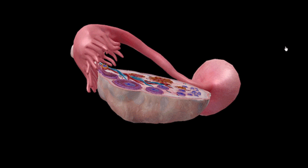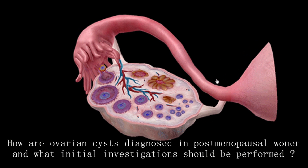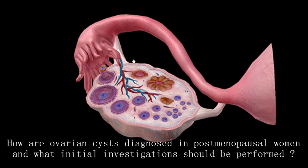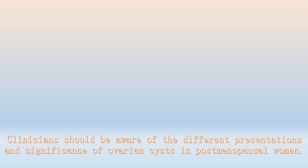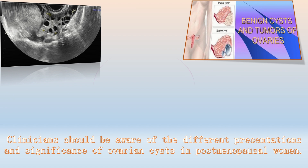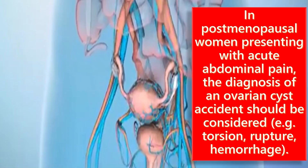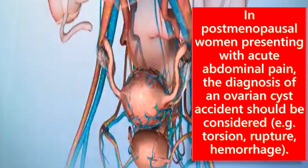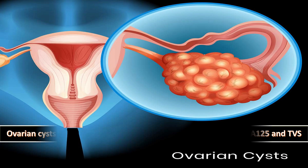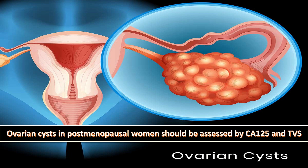How are ovarian cysts diagnosed in postmenopausal women and what initial investigations should be performed? Clinicians should be aware of the different presentations and significance of ovarian cysts in postmenopausal women. In postmenopausal women presenting with acute abdominal pain, the diagnosis of ovarian cyst accident should be considered — for example, torsion, rupture, and hemorrhage. It is recommended that ovarian cysts be initially assessed by measuring serum CA-125 level and transvaginal ultrasound scan.